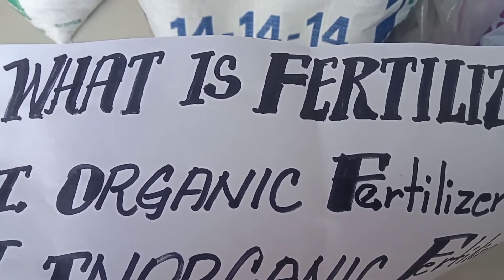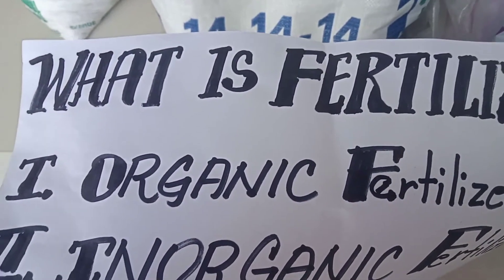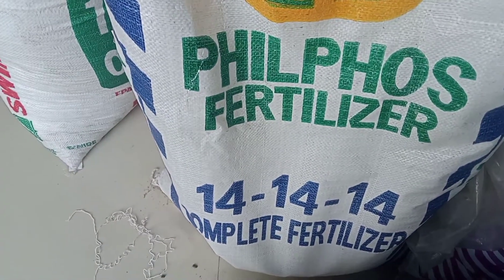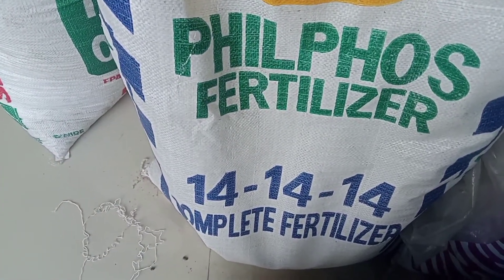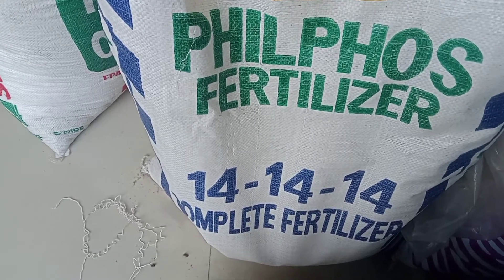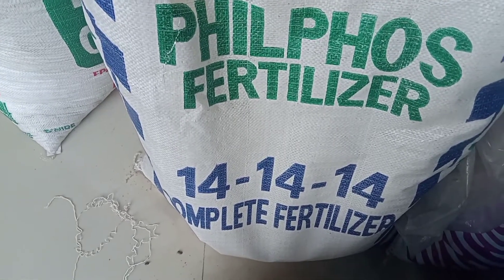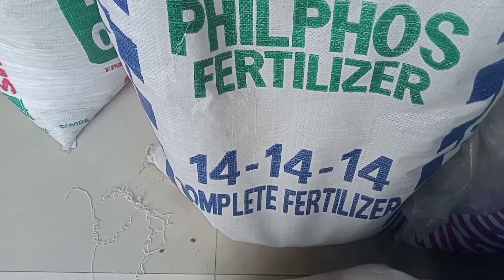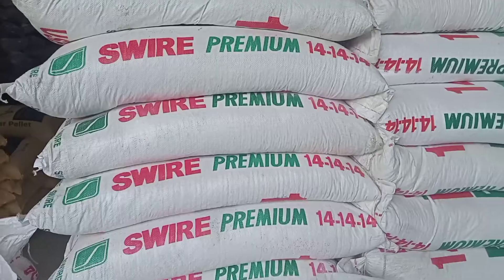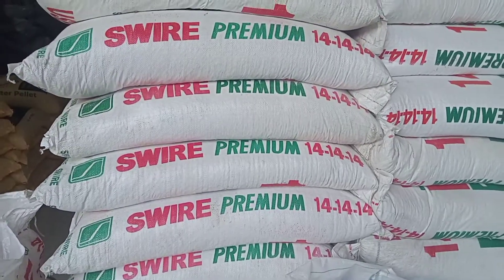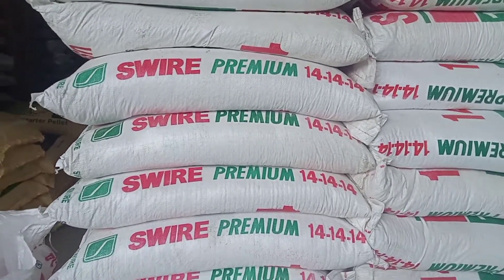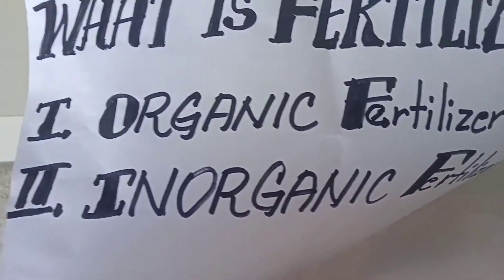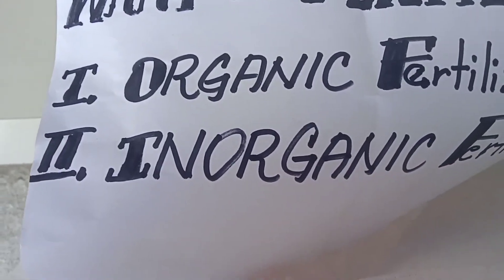What is a fertilizer? Fertilizer is any material that, when applied to the soil, will improve the growth and production performance of our plants or crops. There are two kinds of fertilizer: organic fertilizer and inorganic fertilizer.